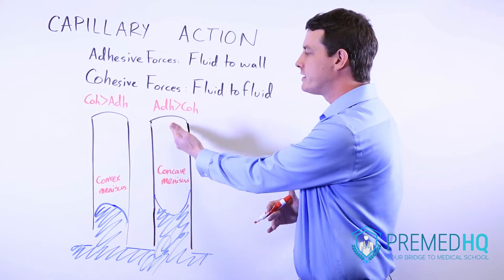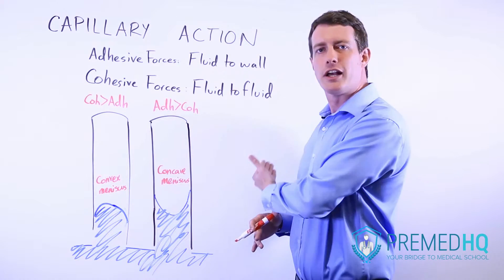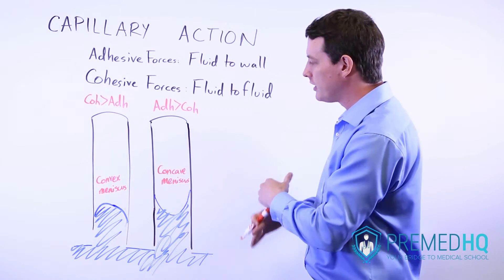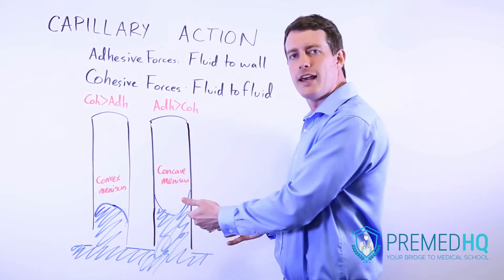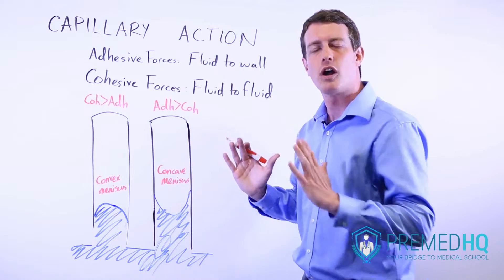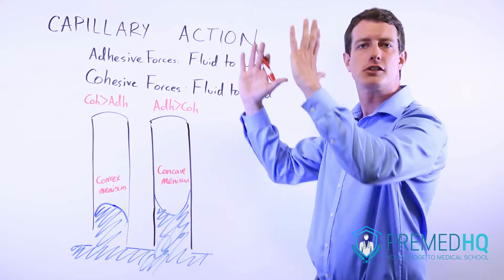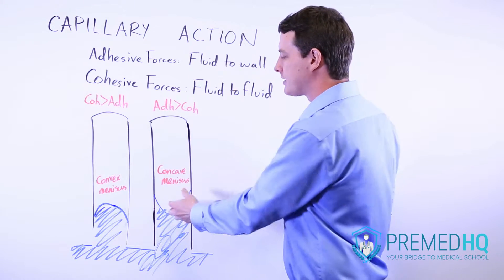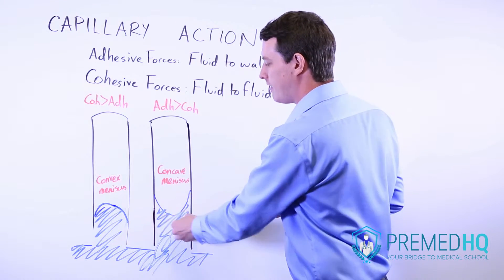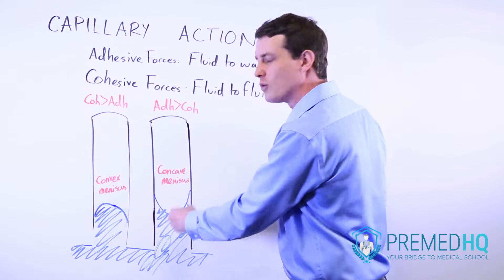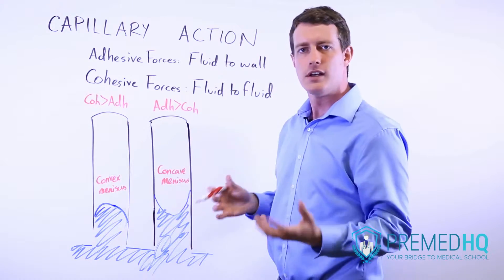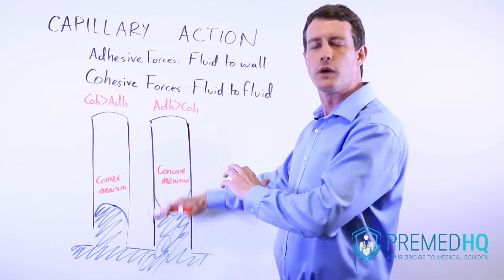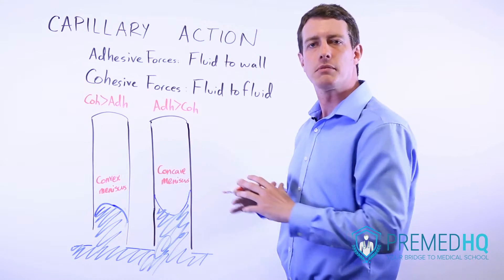If you have adhesive forces that are greater than the cohesive forces, then you'll get the opposite — a concave meniscus — because water will prefer to ride up the walls of that capillary, and the other water molecules are less inclined to follow it all the way up there.